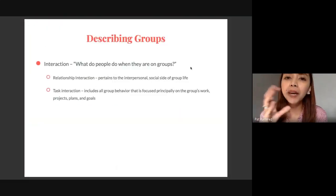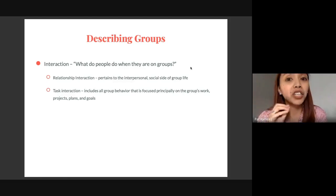When we begin to describe groups, especially in the definition we used earlier, I want to operationally define some of the terms. First is interaction. Interaction supposedly should answer the question: what do people do when they are in groups or with their group members? There are two types: relationship interaction and task interaction.